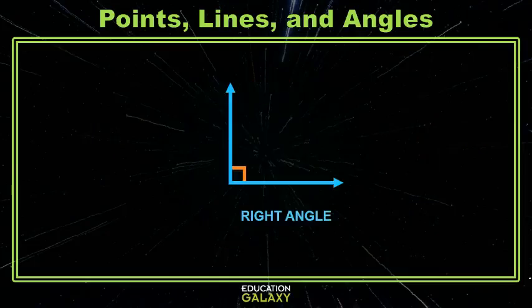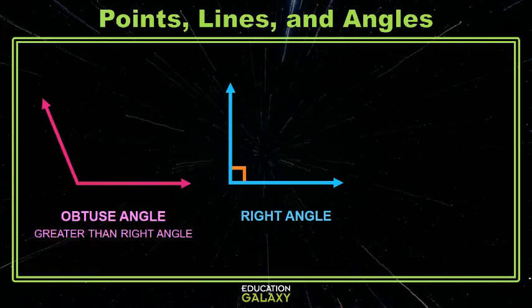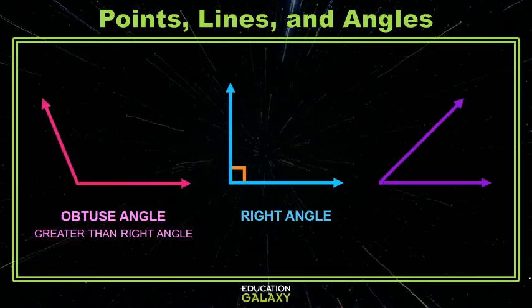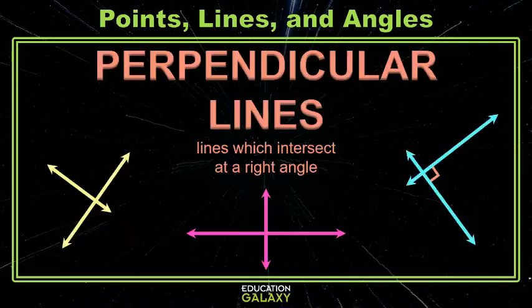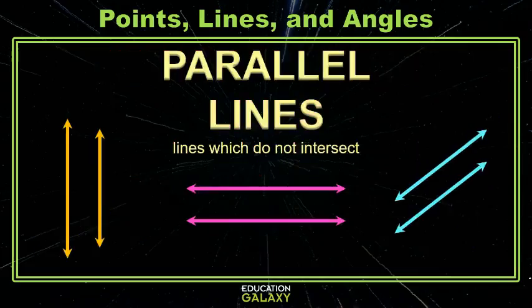Angles can be classified by their size. A right angle looks like a corner. Angles that are bigger than a right angle are called obtuse. Angles that are smaller than a right angle are called acute. Perpendicular lines intersect at a right angle. Parallel lines never intersect.